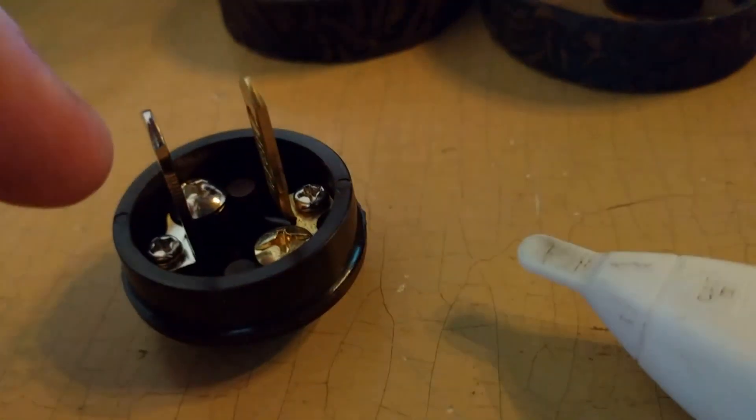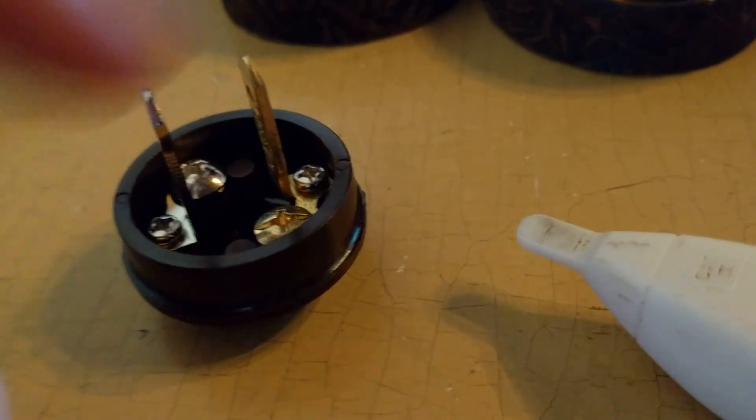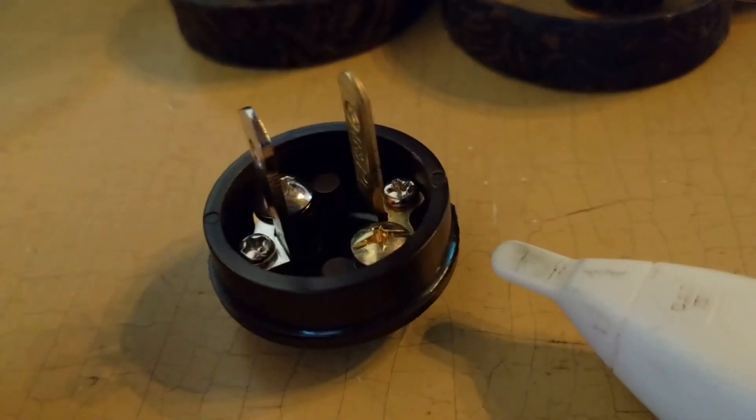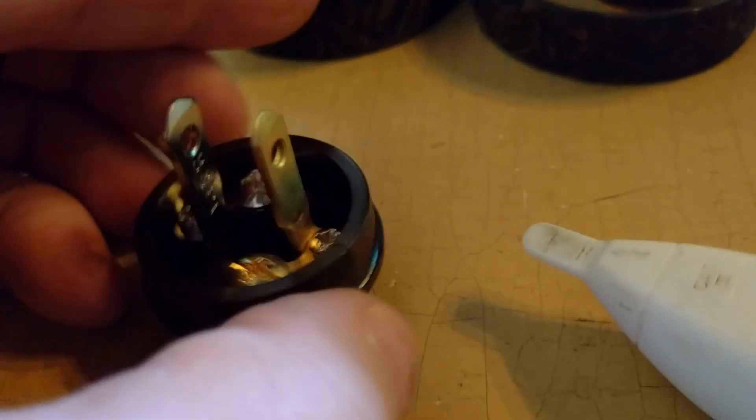Or when the polarity reverses, it wants to get from the earth to the hot side. Remember, you're going to go through the earth. That means if you touch the hot side, the electricity is going to course through your body to get to the hot side, and you will likely die. That's why it matters.